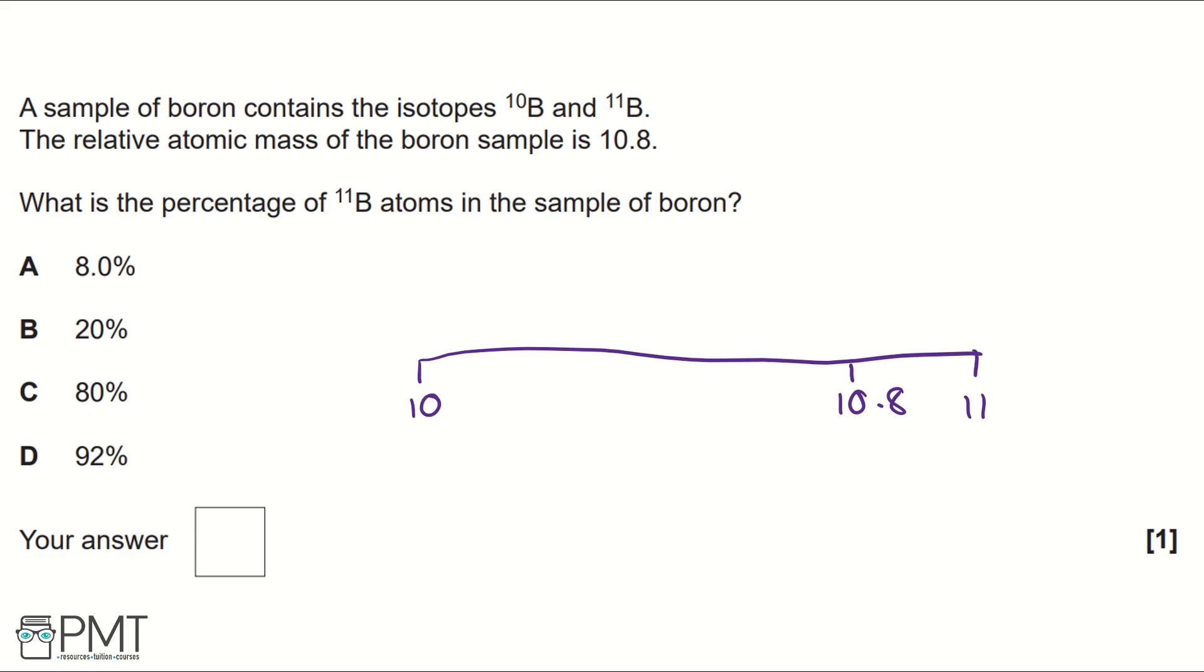And if we were to decide, it would be 80% of 11B and 20% of 10B, and that would create our relative atomic mass of 10.8.